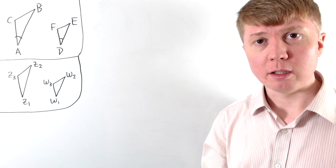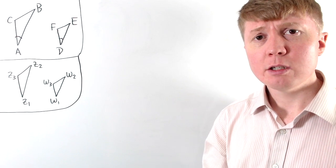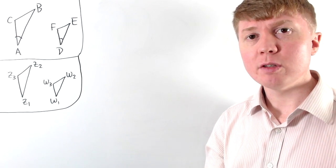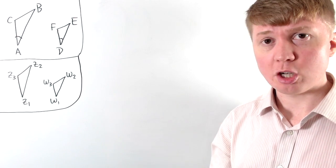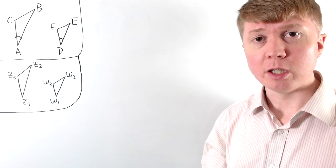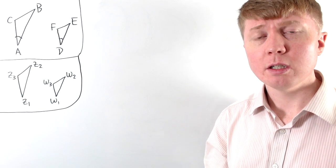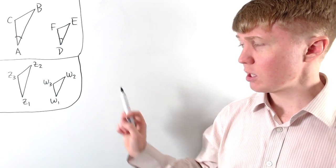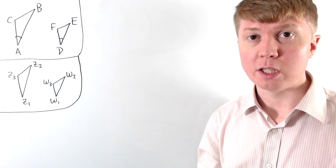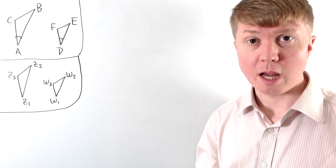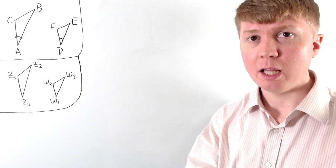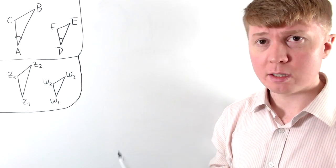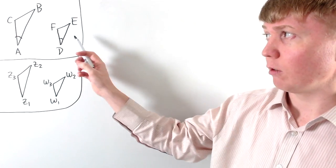We're going to explore similar triangles in the complex plane. If we're given the vertices of one triangle as complex numbers in the complex plane, and we're given the vertices of another triangle again as complex numbers, we'll find a nice way of determining whether or not these two triangles are similar to each other. We'll start in the case where our similar triangles have the same orientation, so one isn't a reflected version of the other — it's just rotated, translated, or enlarged. Let's build up some intuition first, forgetting about complex numbers: how can we tell if two triangles are similar in general?